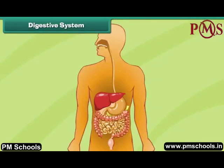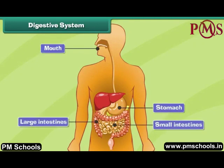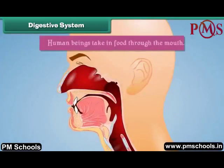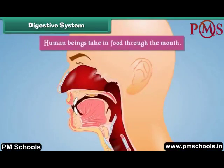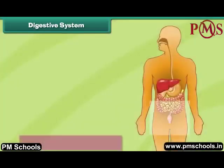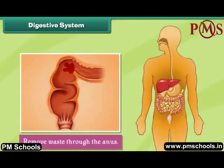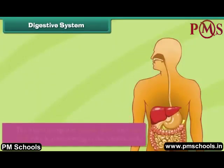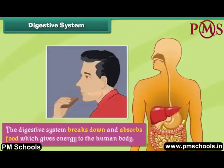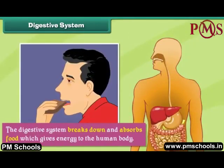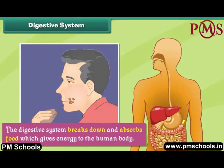The human digestive system consists of the mouth, stomach, intestines and anus. Human beings take in food through the mouth and remove waste through the anus. The digestive system breaks down and absorbs food, which gives energy to the human body.